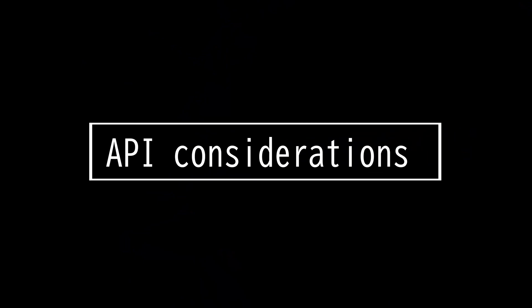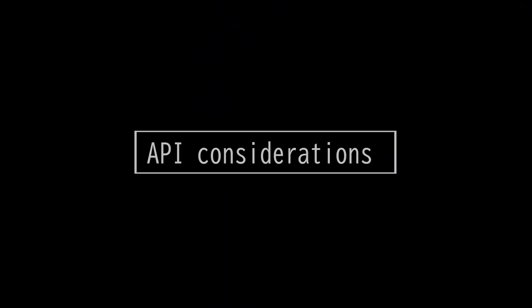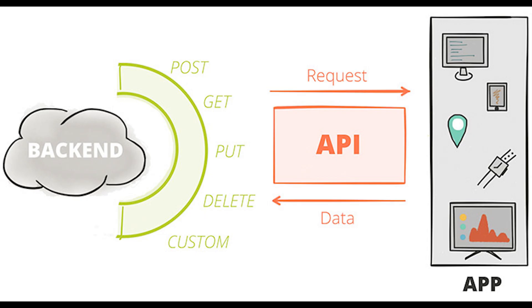This video is on API considerations. Application program interface is simply a code that allows two software programs to communicate with each other.